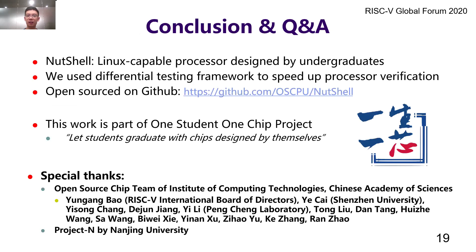To sum up, we designed a Linux-compatible processor in four months. In this process, we used a differential testing framework to speed up processor verification, and the processor we designed has been open-sourced and published on GitHub. This work is part of the One Student, One Chip project, whose aim is to let students graduate with chips designed by themselves. This work is under the guidance of the open-source chip team of the Institute of Computing Technology, Chinese Academy of Sciences. Special thanks to Nanjing University for NPC and the online differential testing framework. These tools helped us save a lot of time. Thank you for listening.